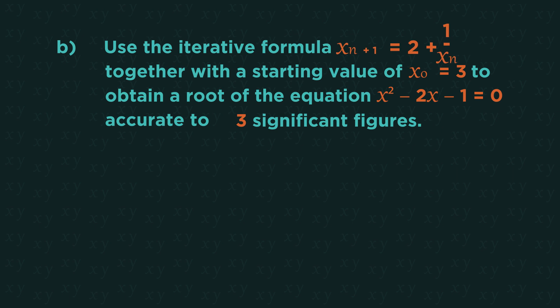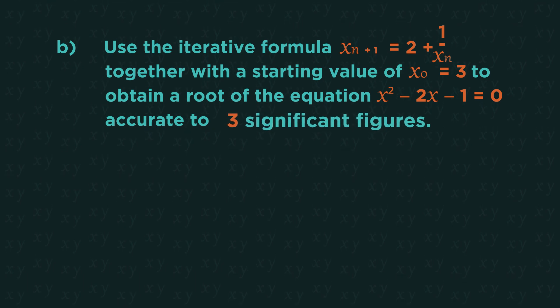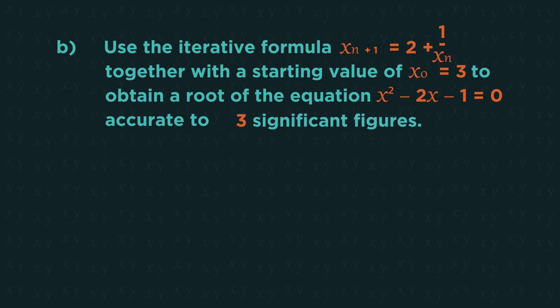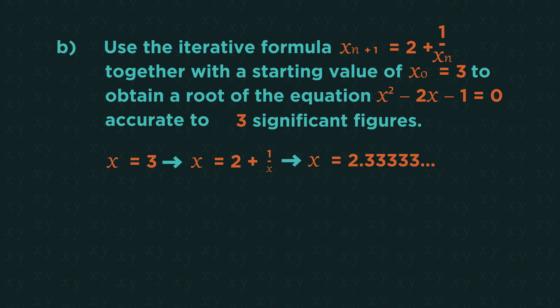So part b, we use this formula and 3 as the starting value. Because the question sets to 3 significant figures, we need to keep 4 significant figures each time. So 1 degree of accuracy more than requested. 3 into our iteration formula gives 2.333.